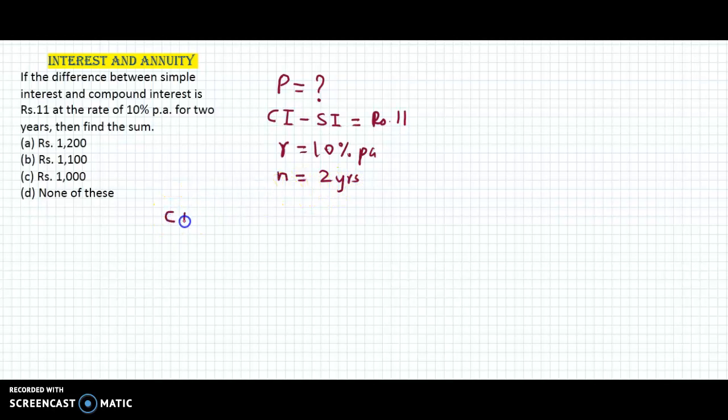Now we apply the formula for simple and compound interest simultaneously. We can write CI minus SI equals P times (1 plus R by 100) raised to N minus 1. This is the formula for compound interest. Minus PNR upon 100, which is the formula for simple interest.